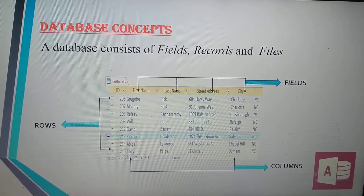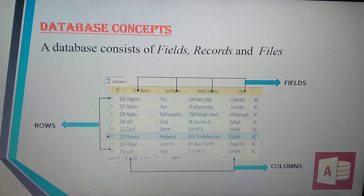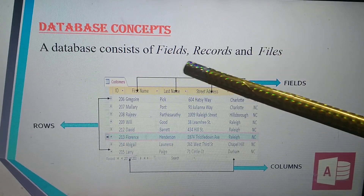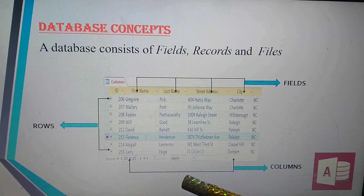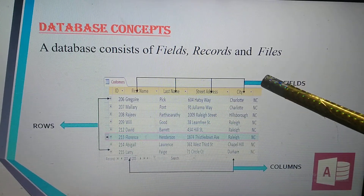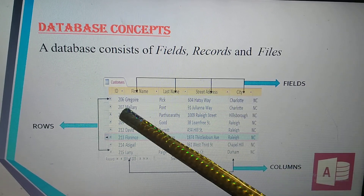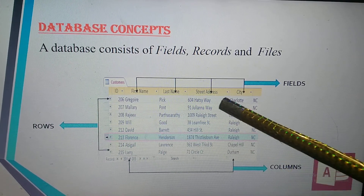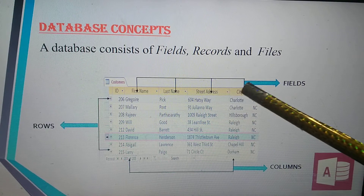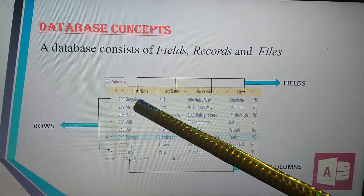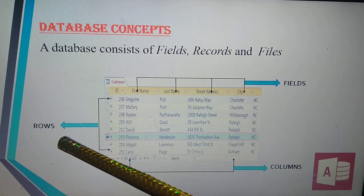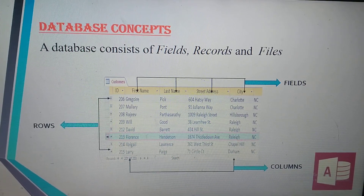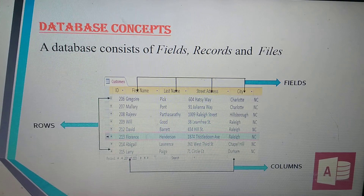Database concept — what does a database consist of? A database consists of fields, records, and files. Now you can see a diagram here. There are columns called ID, first name, last name — these are called fields, shown by the arrows at the top. The rows with names and other data are called records, and the straight vertical ones are the columns.